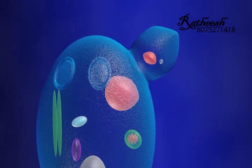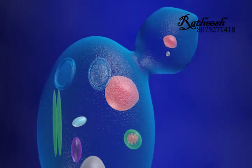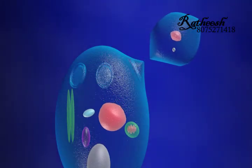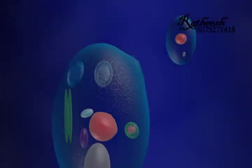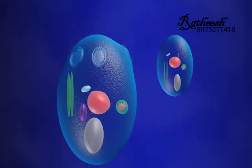The bud then enlarges and detaches from the parent cell by forming a constriction at the base. The daughter cell matures into a new yeast cell. The daughter cell produced during the budding process is generally smaller than the mother cell.